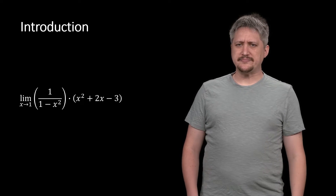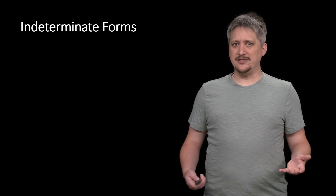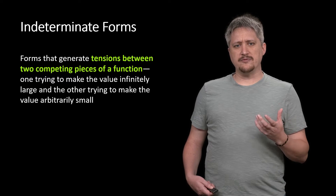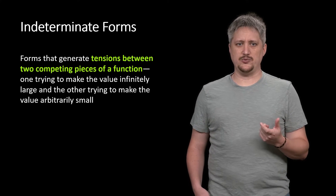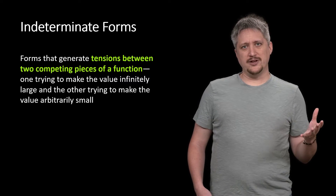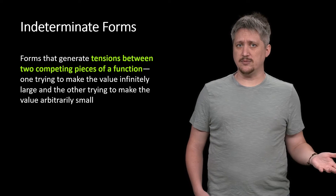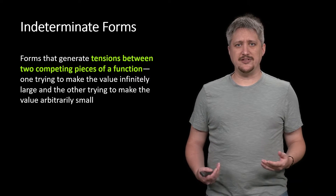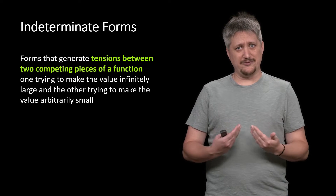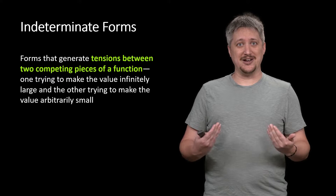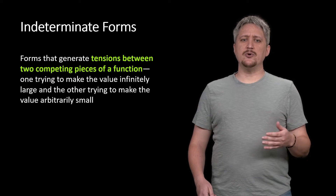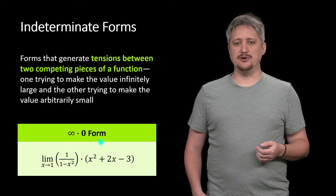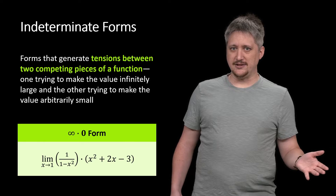So what do we do? This is exactly the problem — this is what we're talking about when we talk about indeterminate forms. In general, indeterminate forms are these forms that generate a tension between two competing pieces of a function, where one of them is trying to make the overall value infinitely large, while the other piece is trying to make it arbitrarily small — going to 0. You have these two things fighting each other to see which one is going to win that battle. The one we just looked at is an example of the infinity times 0 form.